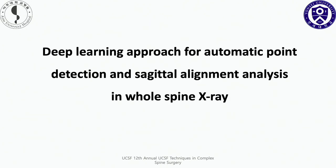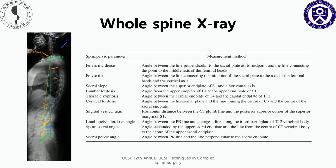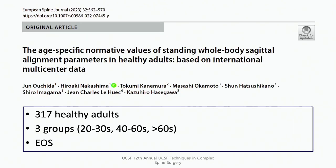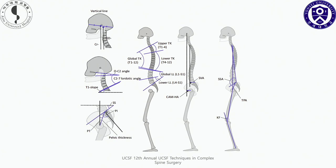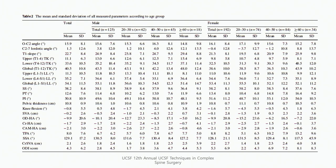The first topic is a deep learning approach for automatic landmark detection and spinal alignment analysis in whole spine X-ray. As you know, there are so many parameters to measure in whole spine imaging. Professor Hasegawa reported the normative values of standing whole spine alignment parameters in healthy adults, with 317 healthy adults included, using EOS.